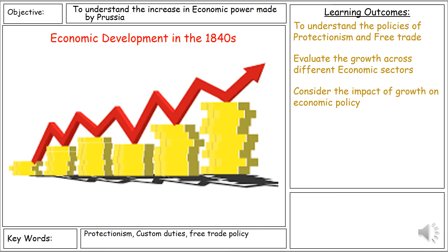Hello and welcome back to another revision lesson on the Unification of Germany section. This is Unit 1, Lesson 4, titled Economic Development in the 1840s. Today's lesson will look at how the German economy developed during the 1840s and how it changed from hundreds of years beforehand. Our key outcomes are to understand protectionism and free trade, evaluate growth across economic sectors, and consider the impact of growth on economic policy. The key words are protectionism, customs duties, and free trade policy.